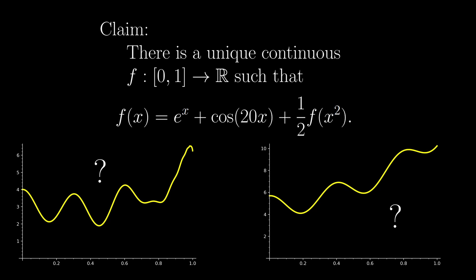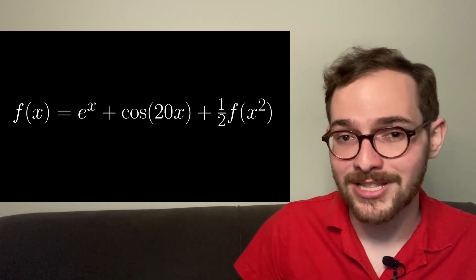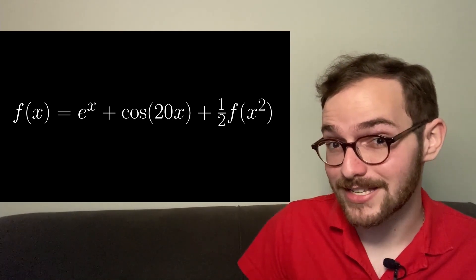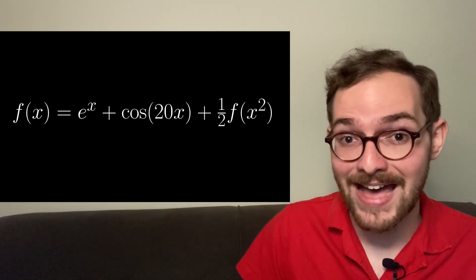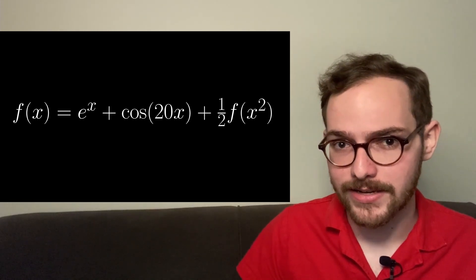In other words, we claim that this equation is enough to implicitly define f. Actually finding a formula for f is, unfortunately, going to be impossible, although you're free to waste your time if you want. Instead, we're going to use infinite-dimensional math to show both that there exists a solution, and how to approximate it.